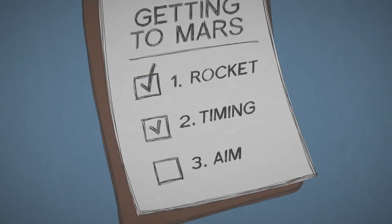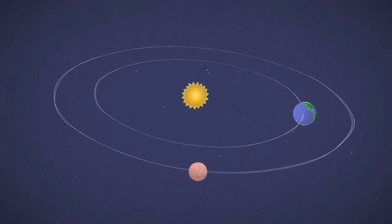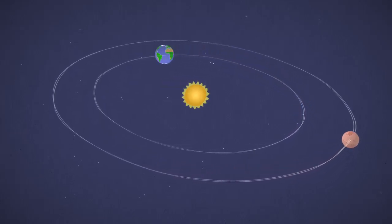Next, make sure you launch at the right time. Mars and Earth orbit the Sun at different speeds and distances. Sometimes they're really far apart, and other times they come closer together.